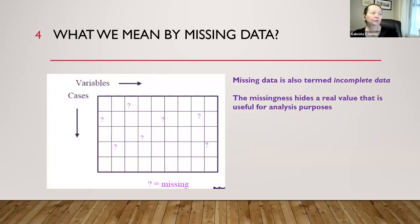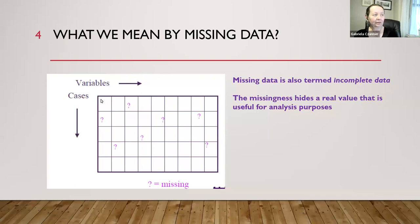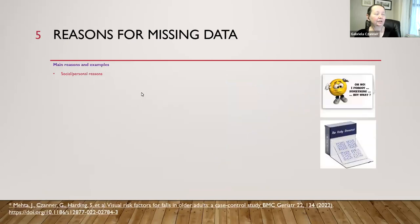What we mean by missing data is that some of the values in the matrix are missing, and I would then call this whole matrix an incomplete dataset. The reasons for missingness can be many.